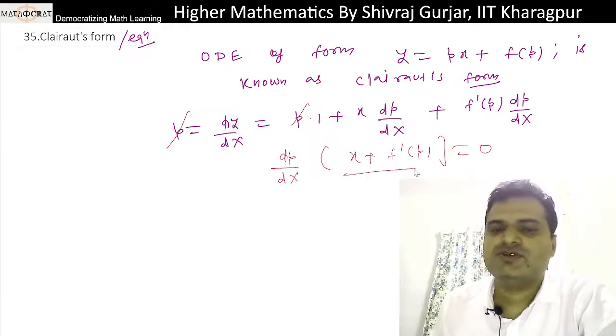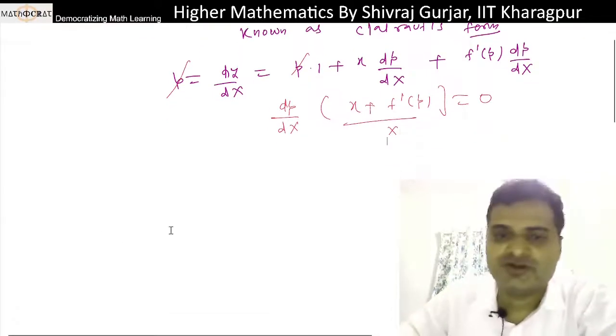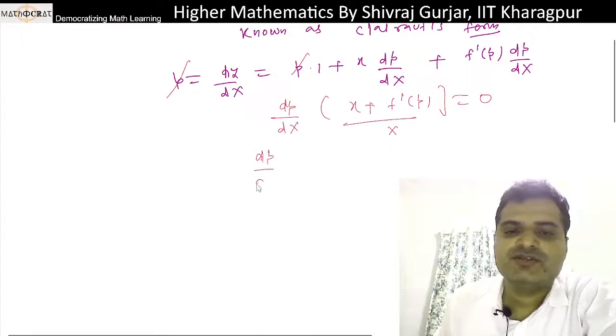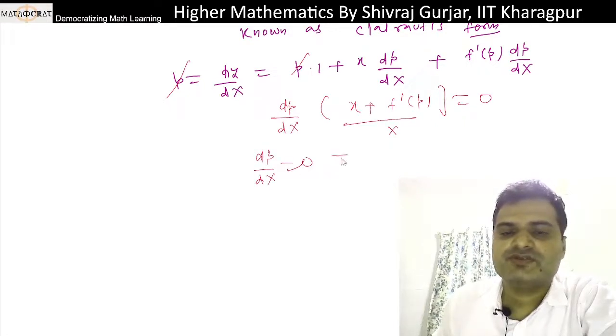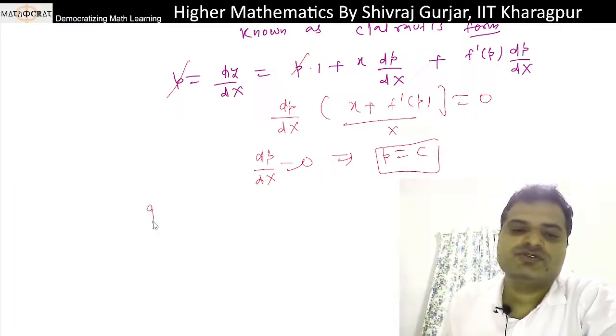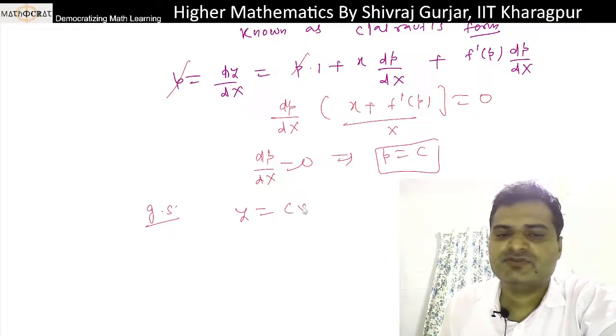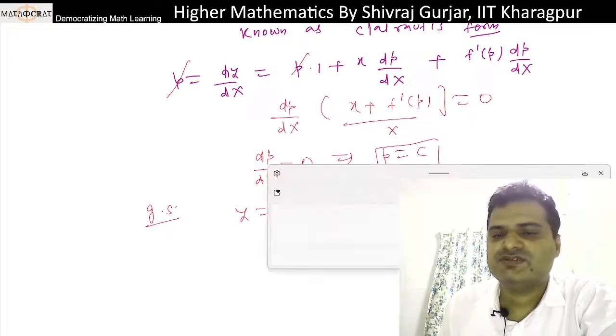This will give the general solution because there is an arbitrary constant involved. We will take dp/dx = 0, so we get p = some constant. For the general solution, where p is, we put c. This is the general solution.